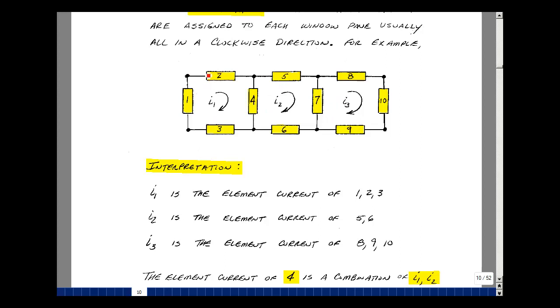Now the current I1 is flowing in this mesh, and it actually is the current that's in element 3, element 1, and element 2. The current I2 is in this mesh, and it's the actual current in element 6 and element 5. And likewise, I3 is the element current of elements 8, 10, and 9.